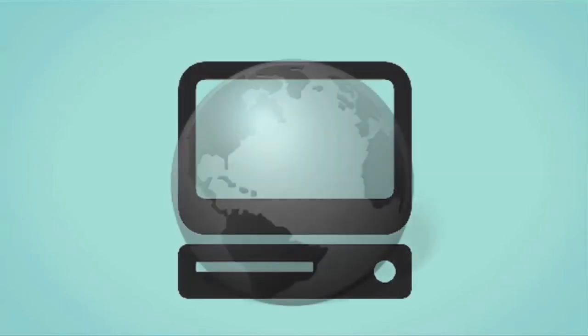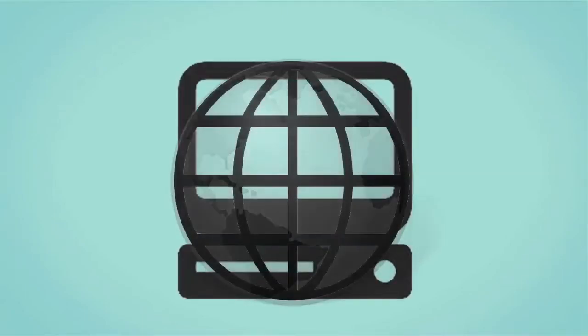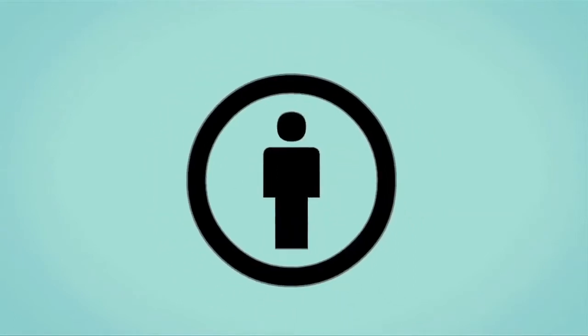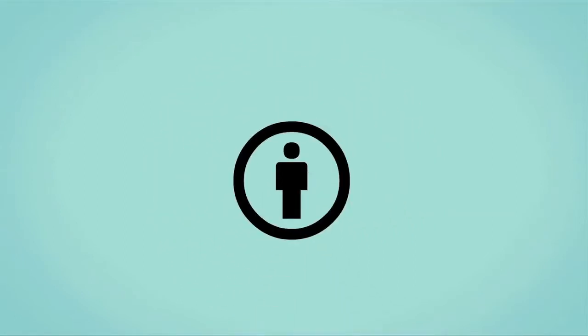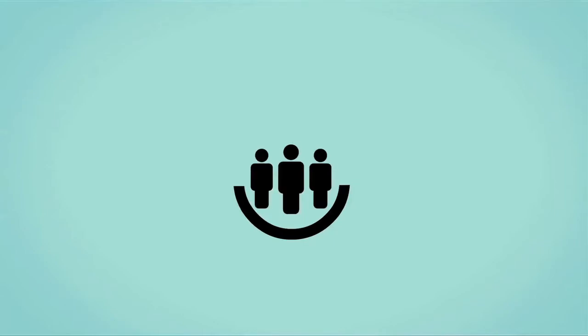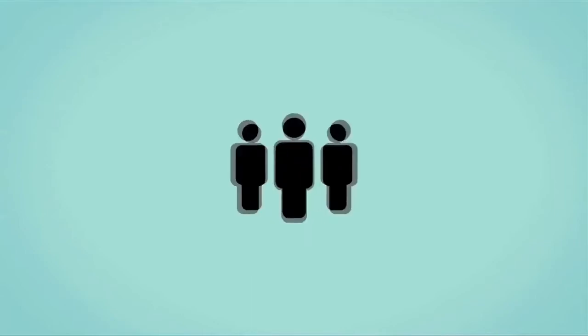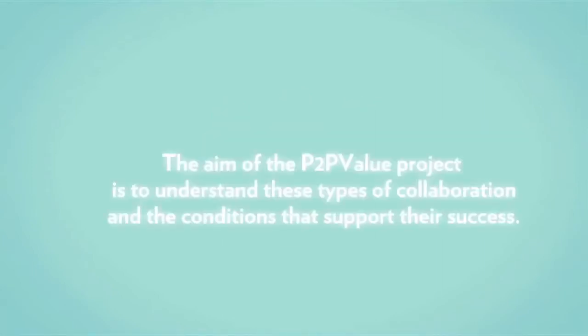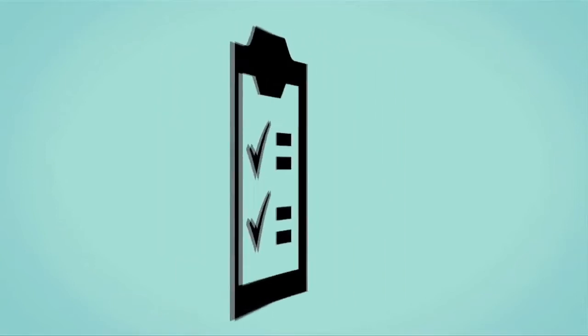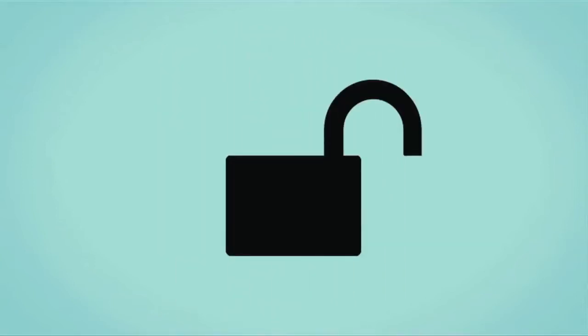Every day on the internet we find more and more projects operating under the logic of common space peer production — people getting together to develop different types of common resources in a collaborative way and based on peer relationships. The aim of the P2P Valley project is to understand these types of collaboration and the conditions that support their success. The results of the research will be used to develop an open software platform designed specifically for collaboration and the commons.